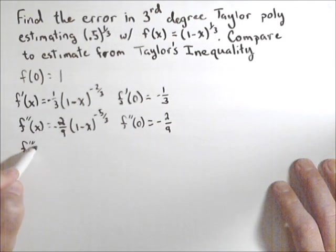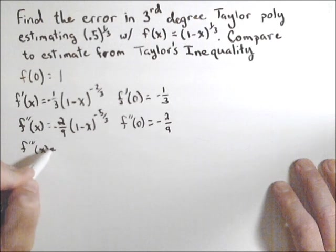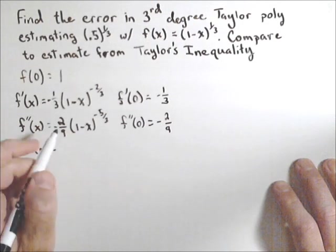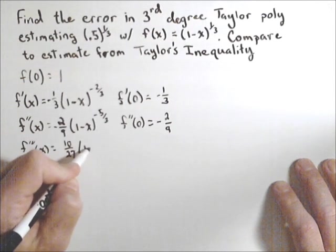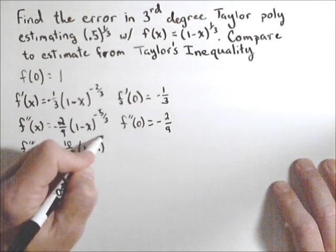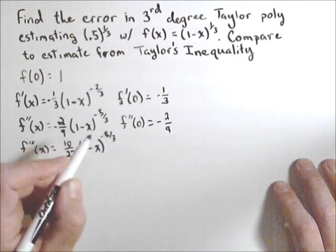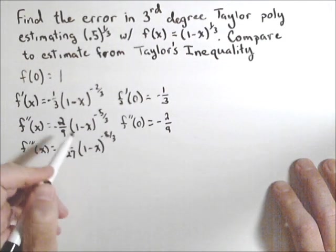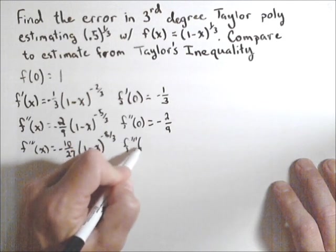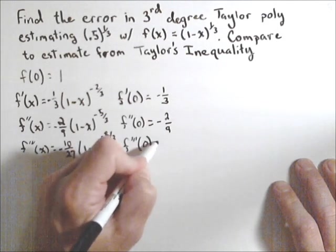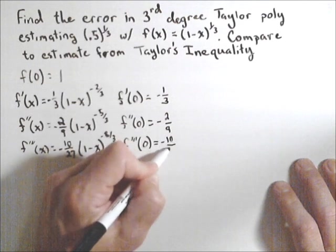f'''(x) is equal to, we bring this down and multiply, that's going to give us 10/27 times (1-x)^(-8/3), times, again, a negative 1 because of the chain rule, making that negative. So f'''(0) is -10/27.